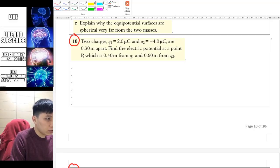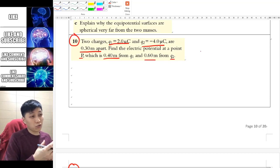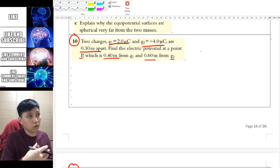Question 10: there are two charges q1 and q2 at a certain distance apart. It asks you to find the electrical potential at point p, which is that much from q1 and that much from q2. One very important idea you must understand is that potential is a scalar quantity while field strength is a vector.